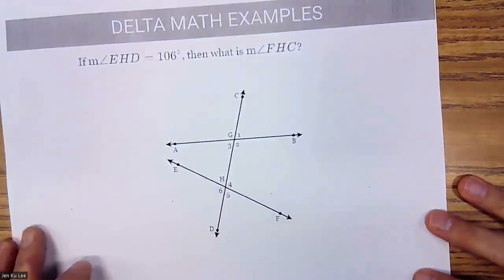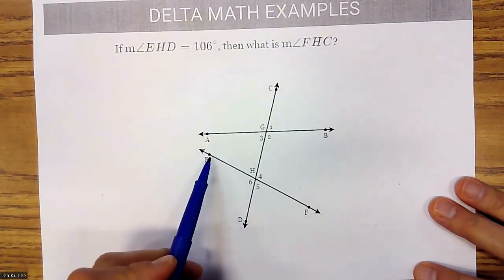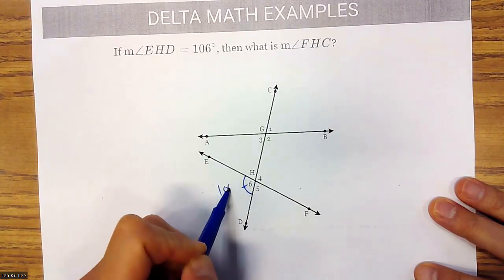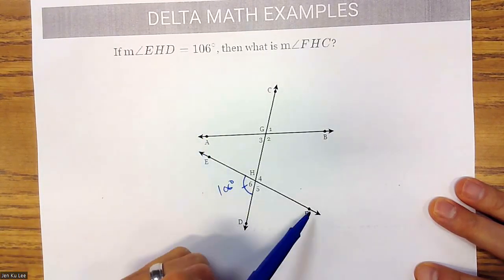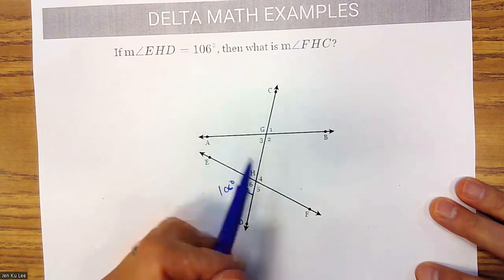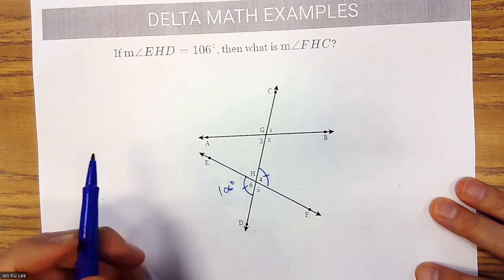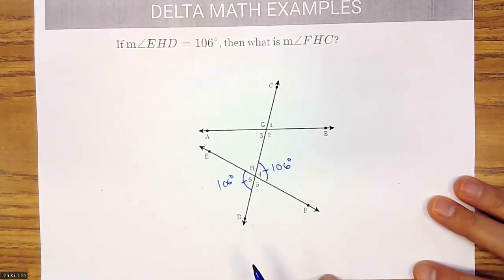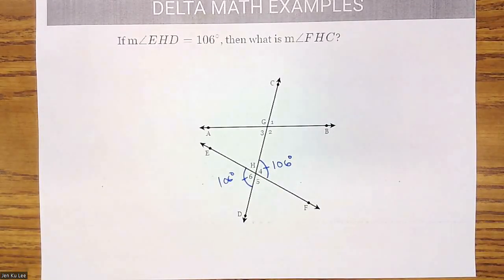If the measure of angle EHD is 106 degrees, then angle FHC is equal to 106 as well, because they are vertical angles. In this section, we are essentially using the relationships of the angle measures to figure out the other angle measures.